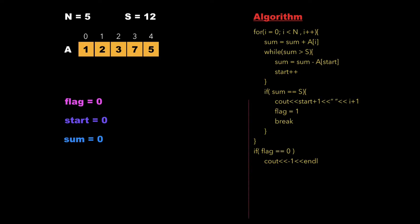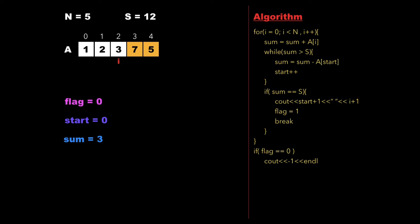The algorithm traverses the array from i equal to 0 to N, calculating sum as sum plus A[i] at each step. Starting at i=0 pointing to element 1, sum becomes 1. Since 1 is less than 12, we continue: sum becomes 3, then 6, all still less than 12. We increment i to point to 7 and calculate sum as 13.